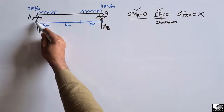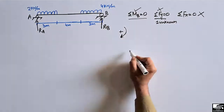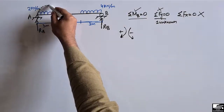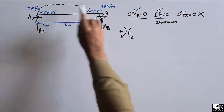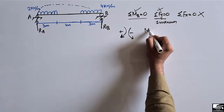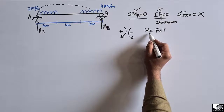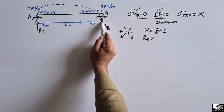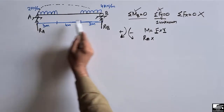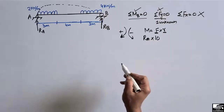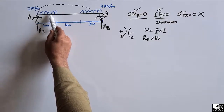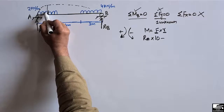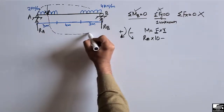Taking summation of moments at point B equal to zero. Clockwise moment is taken as positive and anti-clockwise as negative. RA creates a clockwise moment about B, so it is positive: RA multiplied by 10 meters. The uniformly distributed load of 2 kN per meter acts downward, creating an anti-clockwise moment about B, so it is negative: minus 2 multiplied by 3.